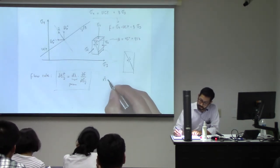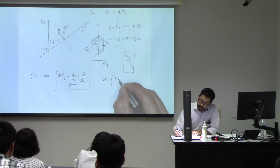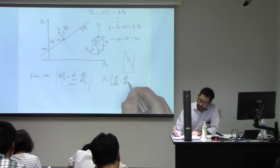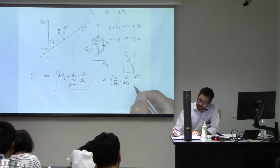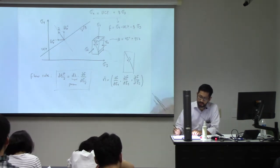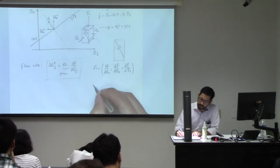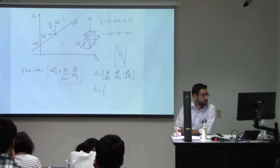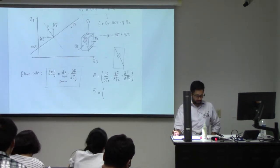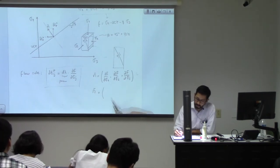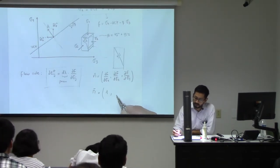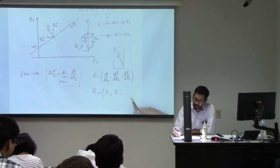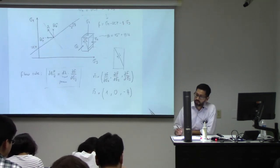So n, if I write in terms of principal stresses, is the partial derivatives of that function with respect to all the variables. The derivative of f with respect to σ₁ is 1, the derivative with respect to σ₂ is 0, and the derivative with respect to σ₃ is negative q.